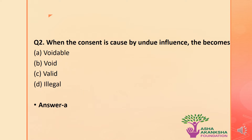The next question is: when the consent is caused by undue influence, then it becomes which of the following? Options are: A) Voidable, B) Void, C) Valid, or D) Illegal. The correct answer is option A — that is voidable, which means that when consent is caused by undue influence, the contract becomes voidable.